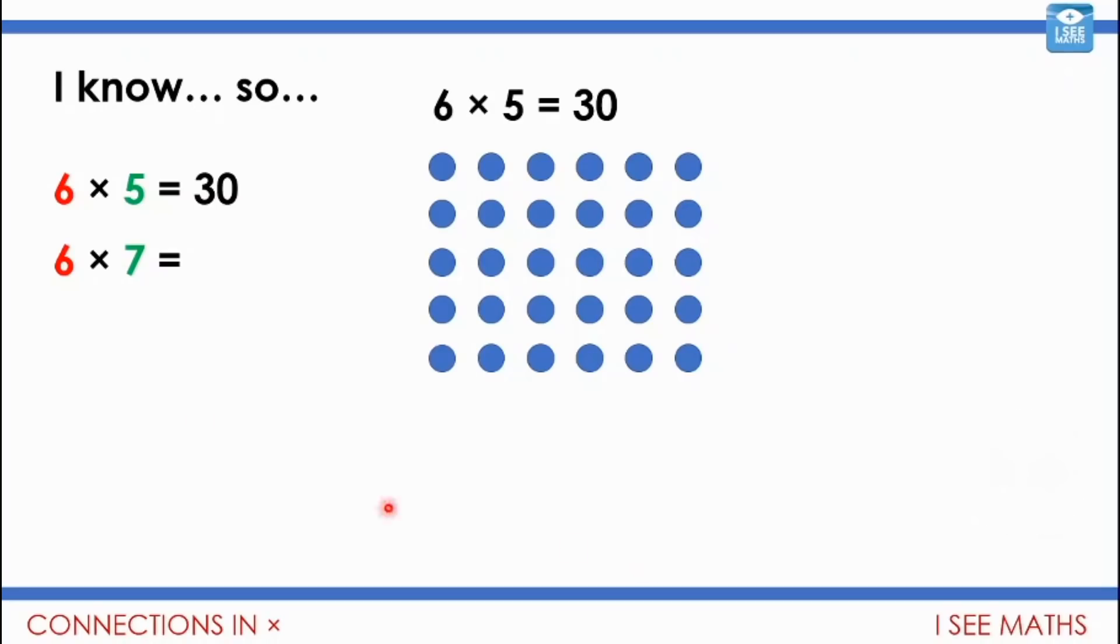Okay, now what we keep the same is it's still lots of six, but we're going to have more lots of six here. So we're still going to keep the sixes. But now can you see instead of having five lots of six, we've now got seven lots of six. So the difference, we've got these two extra lots of six. So six sevens, well, it will be twelve more.